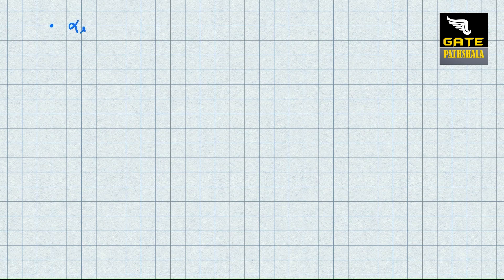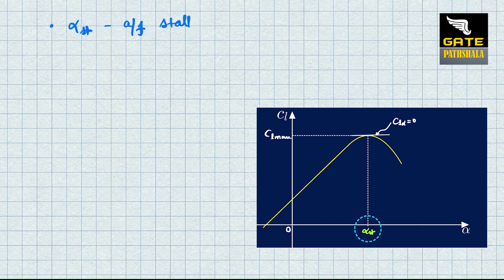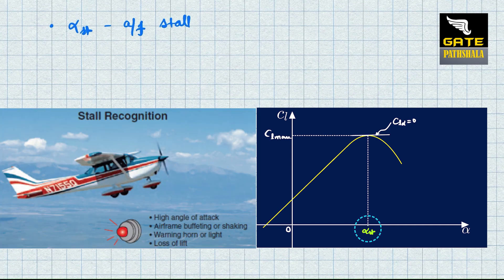These parameters are critical to identifying the performance of an airfoil. The stall angle is the angle of attack at which the airfoil stalls — that is, the lift coefficient will no longer increase with increasing angle of attack — and it corresponds to CL_max.